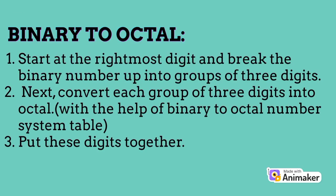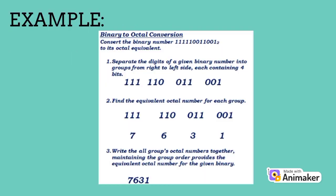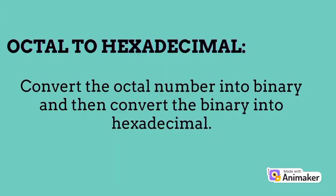Binary to octal. Start at the rightmost digit and break the binary number up into groups of three digits. Next, convert each group of three digits into octal with the help of the binary to octal number system table. Put these digits together. Here is an example of binary to octal conversion.